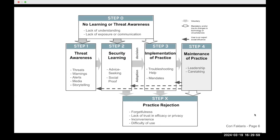This is a six-step process, including two states that we inferred from the data. Step 0: no threat awareness. Then Step 1: threat awareness. Step 2: security learning. Step 3: implementation of practice. Step 4: maintenance of practice. And finally, our last inferred state: practice rejection.